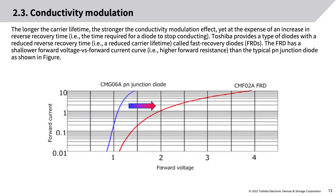The longer the carrier lifetime, the stronger the conductivity modulation effect, yet at the expense of an increase in reverse recovery time — i.e., the time required for a diode to stop conducting. Toshiba provides a type of diode with a reduced reverse recovery time, i.e., a reduced carrier lifetime, called fast recovery diodes (FRDs).